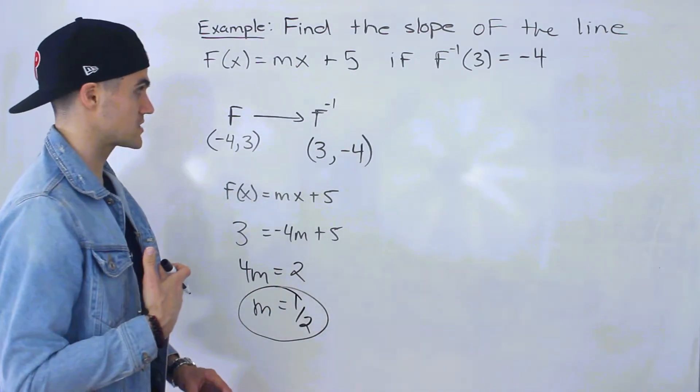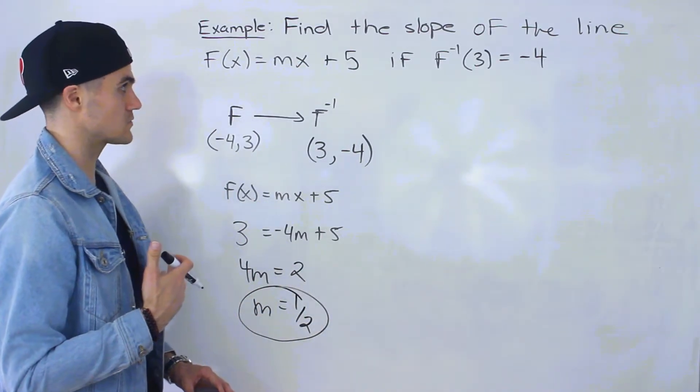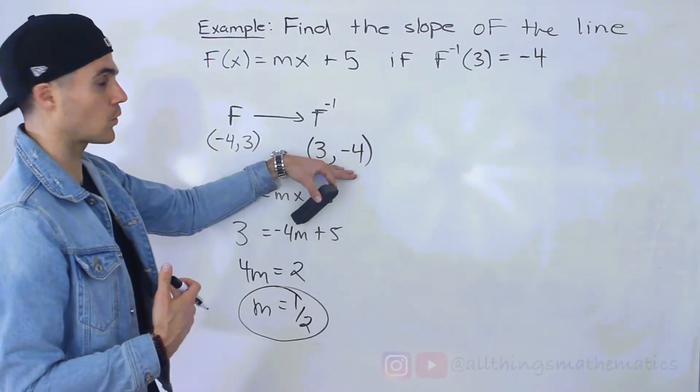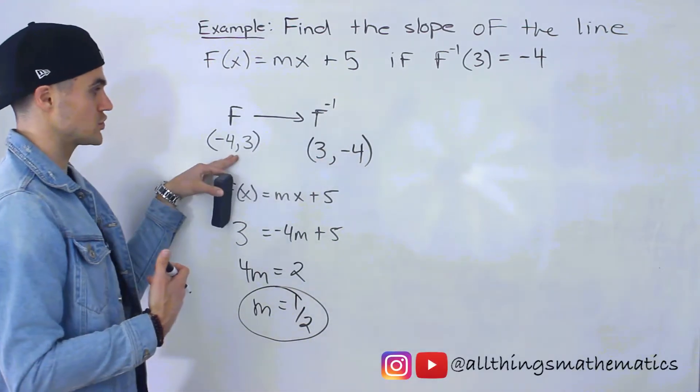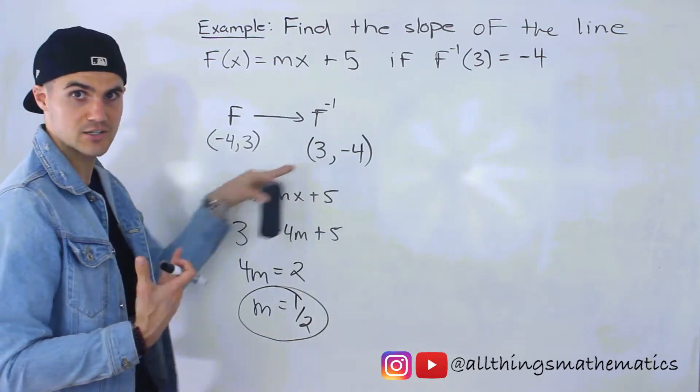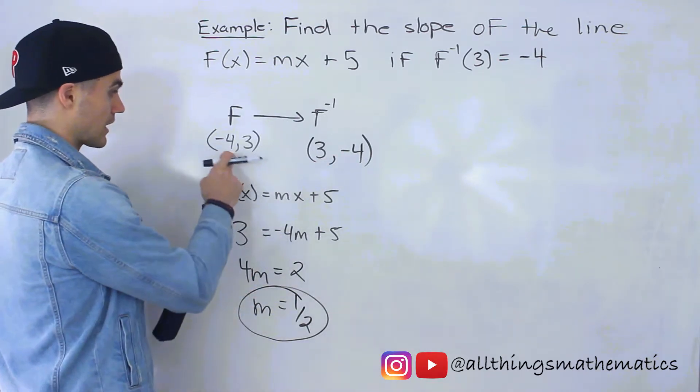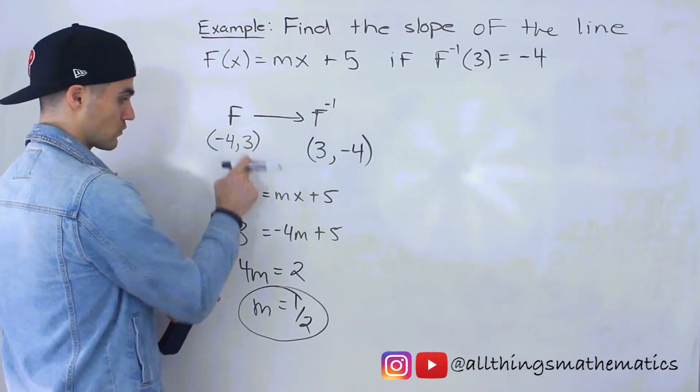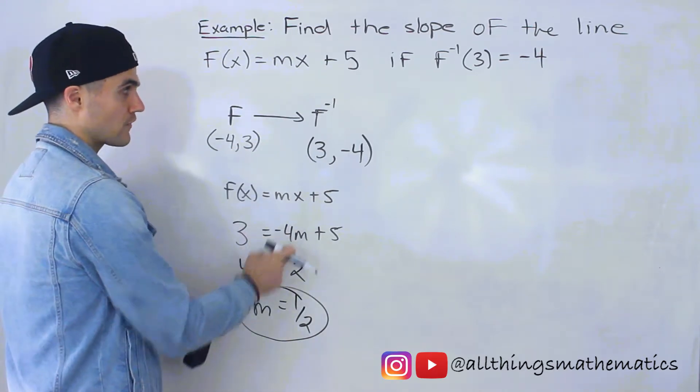So in my opinion, that's the best way to go about it. That's the easiest way. Notice that this is the coordinate on the inverse. So on the function, the coordinate is going to be (-4, 3), just this interchanged. So we could plug in negative 4 for the x value, 3 for the y value, and just solve for that m value.